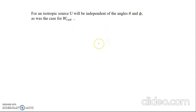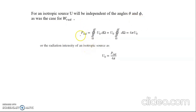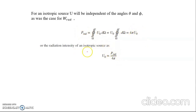For an isotropic antenna, U is independent of θ and φ since radiation is equal in all directions. In that condition, P_rad = U₀ × 4π, therefore U₀ = P_rad / 4π, where U₀ is the radiation intensity of an isotropic source. We consider U₀ because for an isotropic antenna there is no particular direction of θ and φ, hence 4π is used.